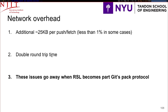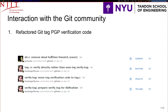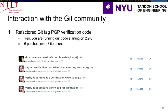We didn't stop at theory — we reached out to the Git community, presented these issues, and started working with them to fix what they call the low-hanging fruit first. We refactored the Git tag GPG verification code, which you should see in version 2.9.0. It was a really thorough and time-consuming effort because they do care about their code — they will not let a single whitespace go through, and commit messages must be perfect and non-ambiguous. After eight iterations of the same batch series of six patches, I finally made it through, and now the groundwork for all these fixes is in place.